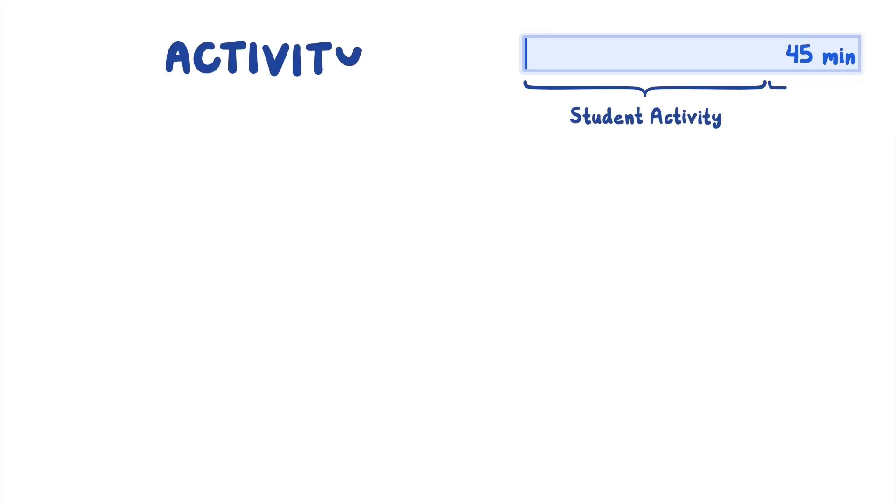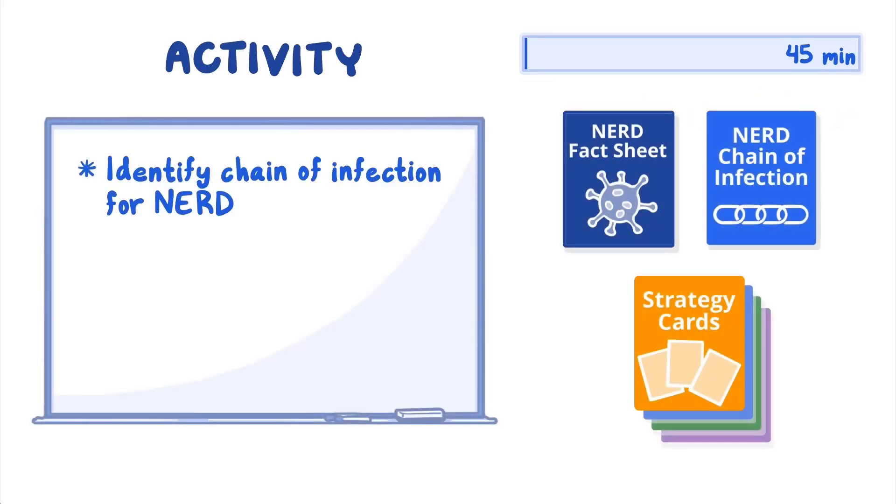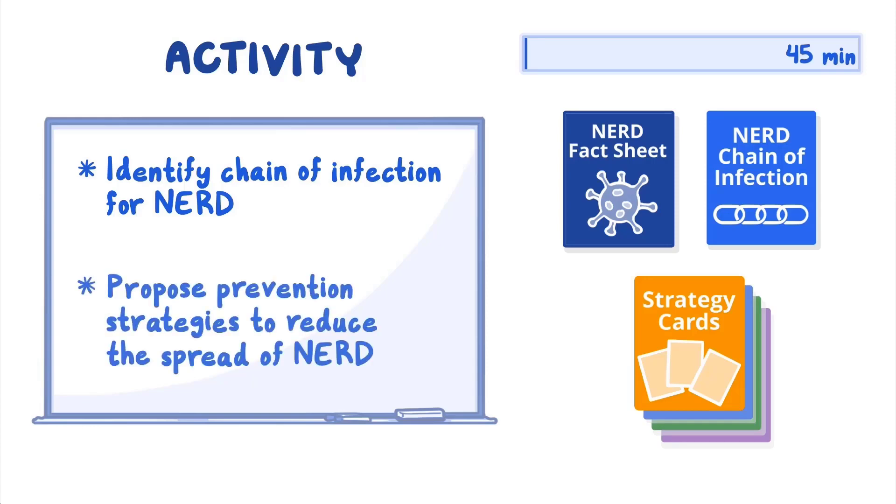In this 35-minute activity and 10-minute class discussion, students identify the chain of infection for NERD and propose prevention strategies to reduce the spread of the disease.